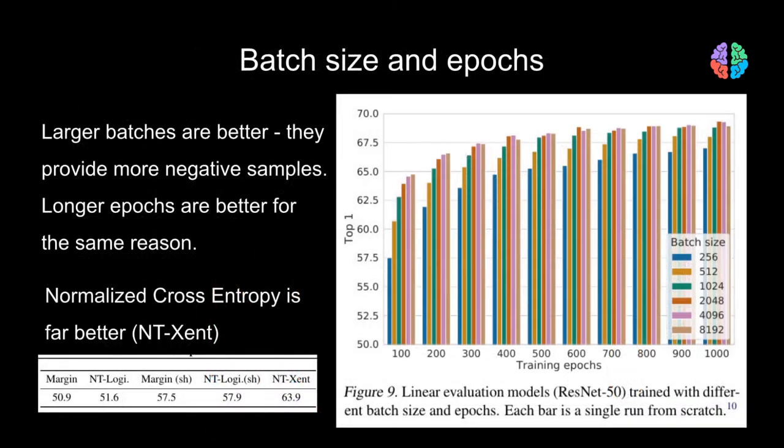An additional twist introduced in the SimCLR framework is that of batch size and training epochs. They experiment with batch sizes ranging from 256 to 8000 and show that accuracy only keeps increasing as we increase the batch size. They also train all the way till 1000 epochs and show that accuracy only gets better with increasing epochs.